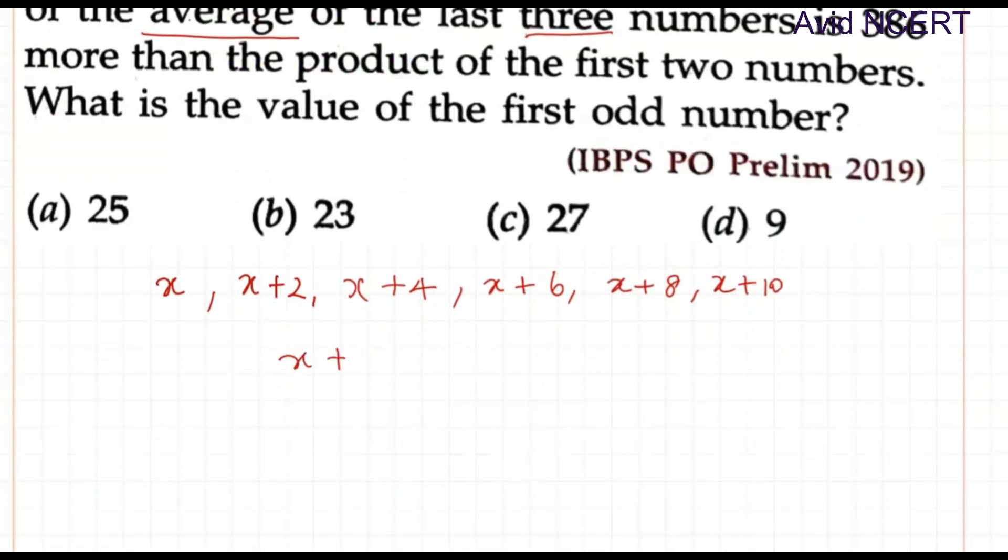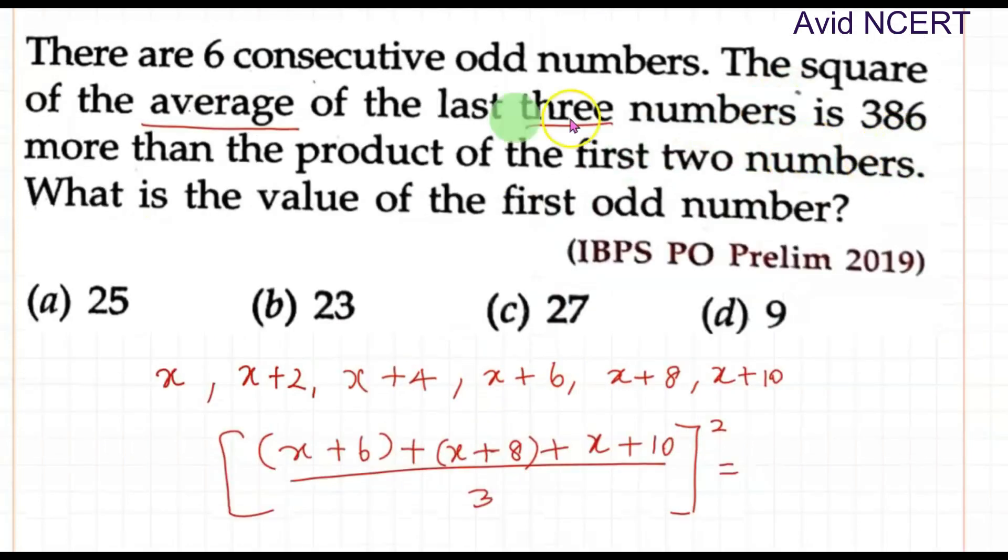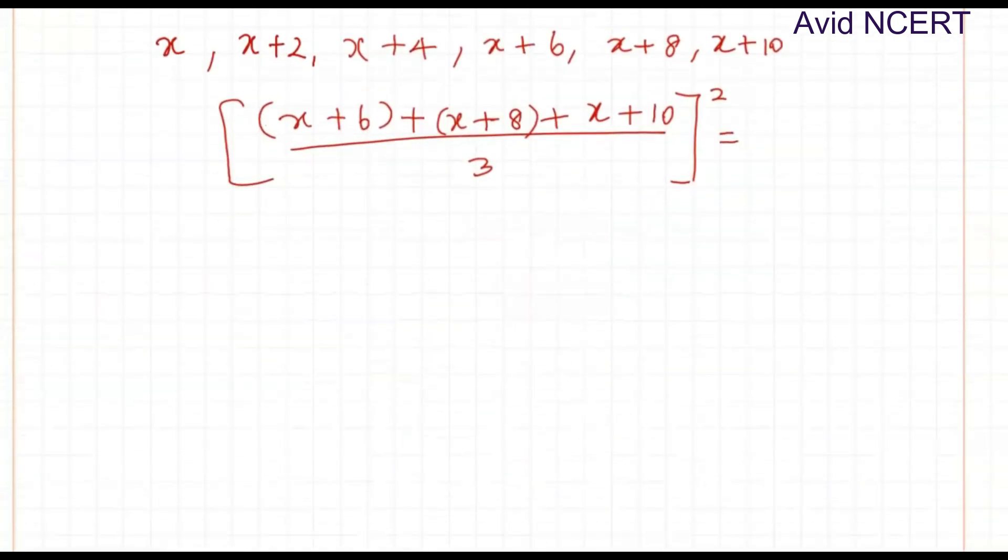Which is x plus 6 plus x plus 8 plus x plus 10 divided by 3, since it is three terms. The average we are taking is divided by 3, and it's square, so it's all square equals 386 more than the product of first two numbers, so it is 386 plus x times x plus 2.